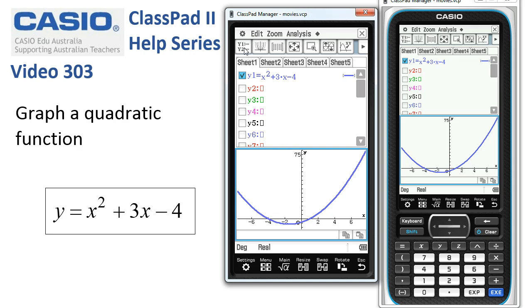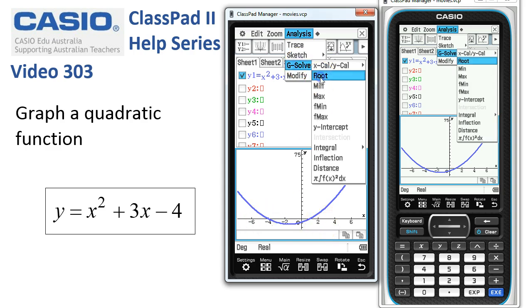To locate key features of this parabola, we're going to use the analysis menu. So to get the horizontal intercepts or the roots, under G solve we have root.